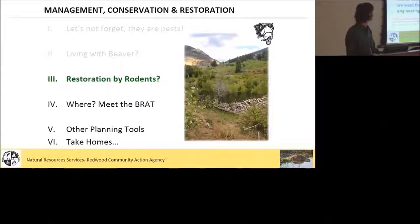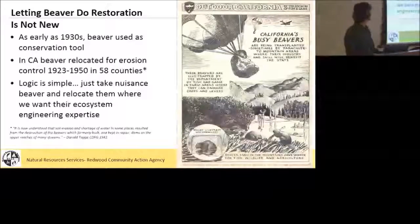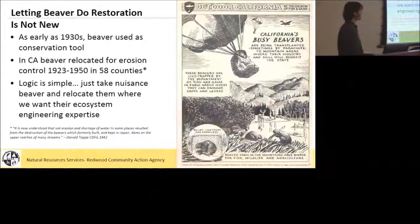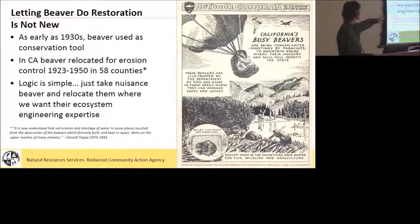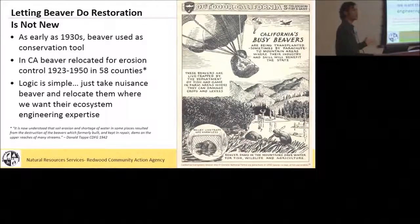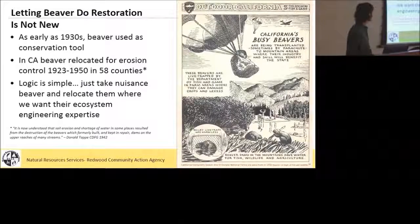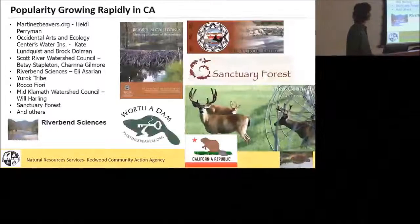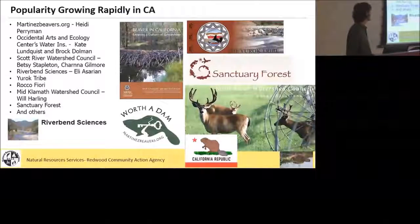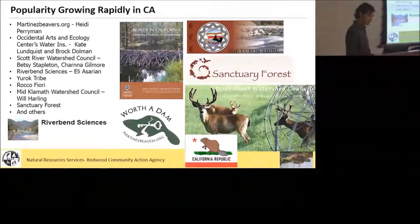Restoration by rodents is not a new idea. People have been doing this as early as the 30s. They were parachuting beaver in California to a variety of places in the 20s and all the way up to the 50s. The logic is simple: take them where they're not wanted, put them where they are wanted. There's an interesting quote here from Donald Tappy from CDF&G in 1942. He was the one who originally established that historic range which has been shown to be a little inaccurate, but even he was saying we should bring these beaver back — they're important and help with erosion problems. The popularity of beaver-assisted restoration is growing rapidly in California, with all kinds of folks getting involved.